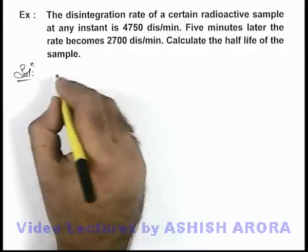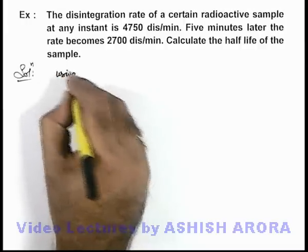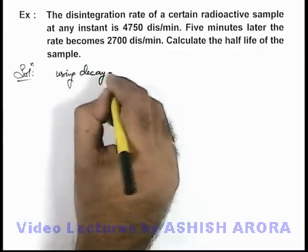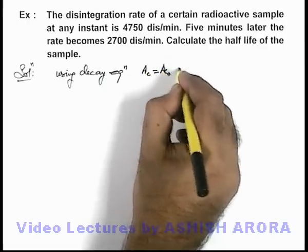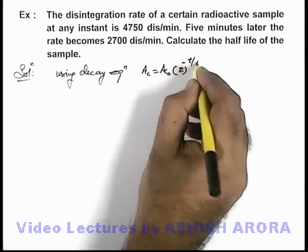Again, we can directly write using the decay equation. For activity, we can write: activity equals activity not times 2 to the power minus t by T.